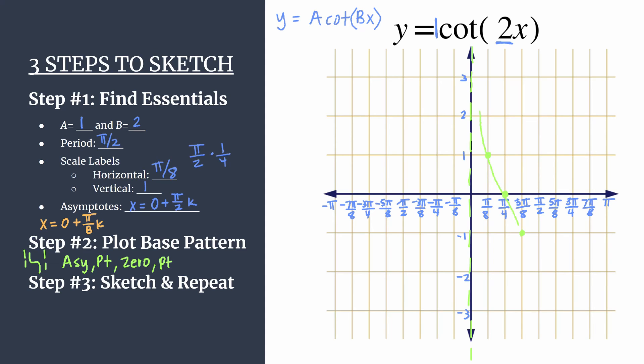So sketching in our cotangent graph right here, and we have one full cycle of cotangent 2x. The repeat part is very easy. All you have to do is replicate this pattern over and over again.